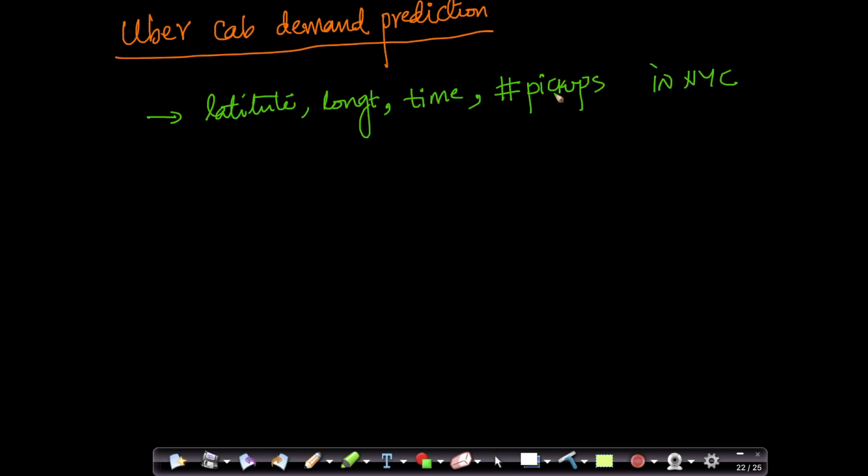We're given data for number of cab pickups that have happened at that location at a given instance of time. Now the amount of data that we're given is actually very large. Let's assume this is New York City. In a given location, you can represent a location by latitude and longitude.